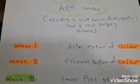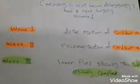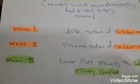According to this book, wave 1 is generated from the distal portion of the cochlear nerve. Wave 2 is generated from the proximal section of the cochlear nerve. Wave 3 is generated from the lower pons, especially the superior olivary complex.